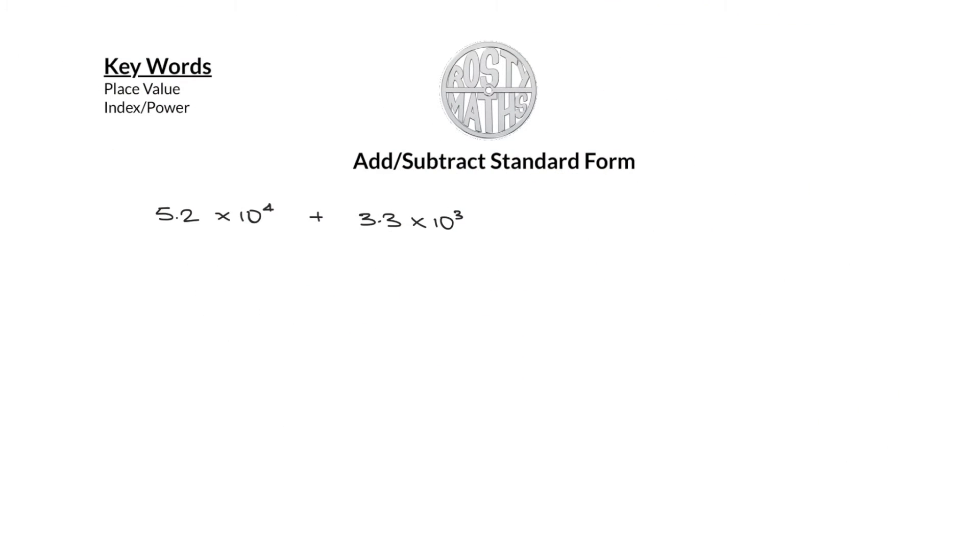Now before we can add numbers in standard index form, we need to check one main thing: check that the powers are the same. I should probably add here that I am going to be doing this in two methods. It's the same thing for taking away, so we might not do a taking away question. So I'm going to do two methods. You pick the method that you like best.